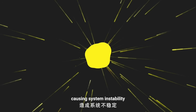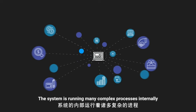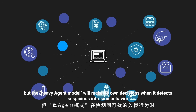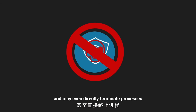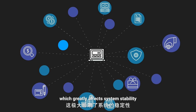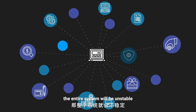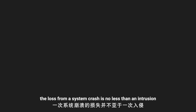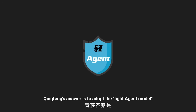However, there are differences between agent models. Some agents modify the operating system kernel after being deployed, causing system instability — this is called the heavy agent model. The heavy agent model makes its own decisions when it detects suspicious intrusion behavior and can even directly terminate processes, which greatly affects system stability. For companies with large-volume businesses, the loss from a system crash is no less than an intrusion.